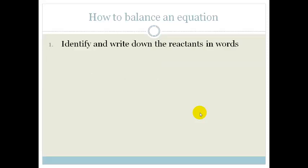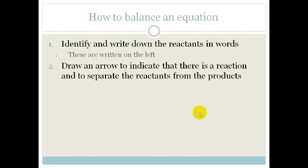Step 1: You need to identify and write down the reactants in words. The reactants are always written on the left-hand side of the equation. Step 2: You draw an arrow to indicate that there is a reaction and to separate the reactants from the products.